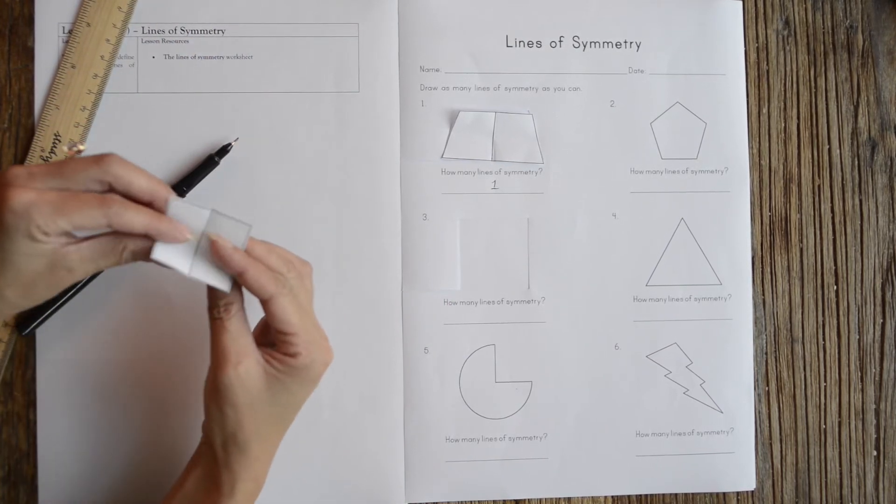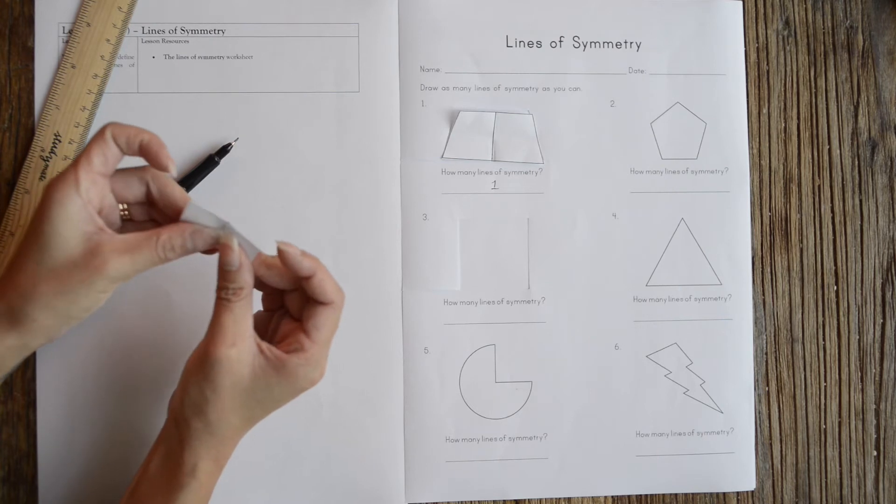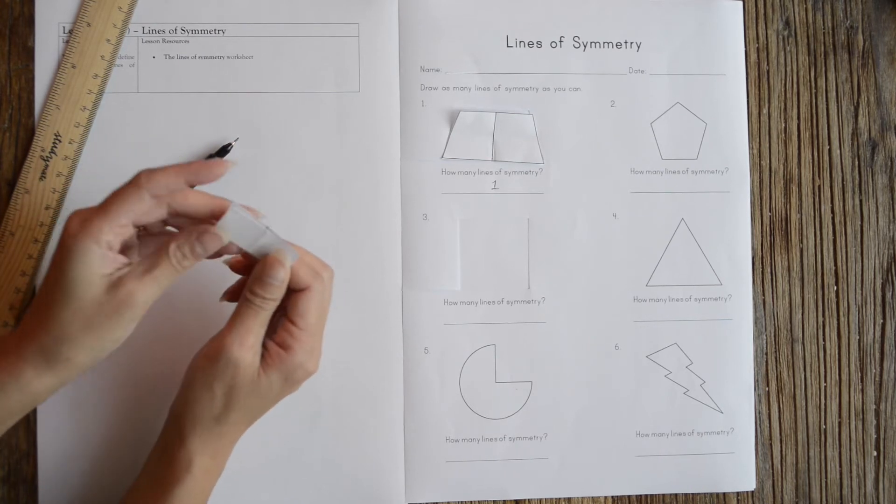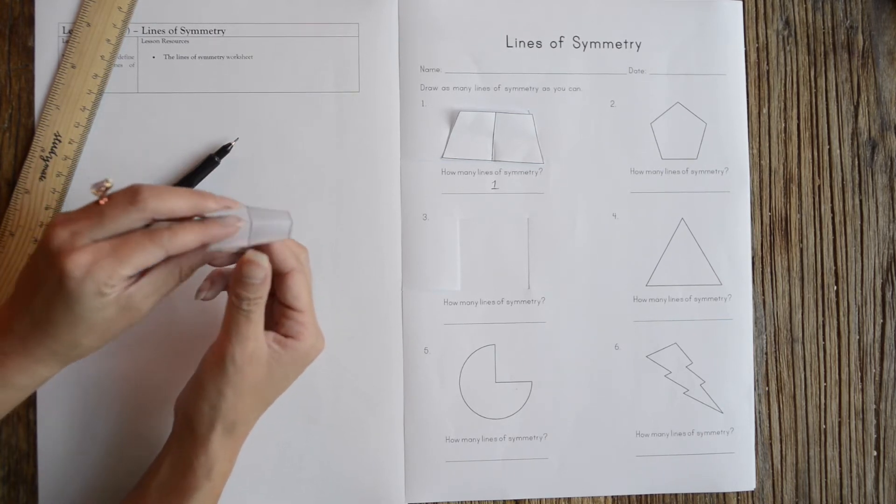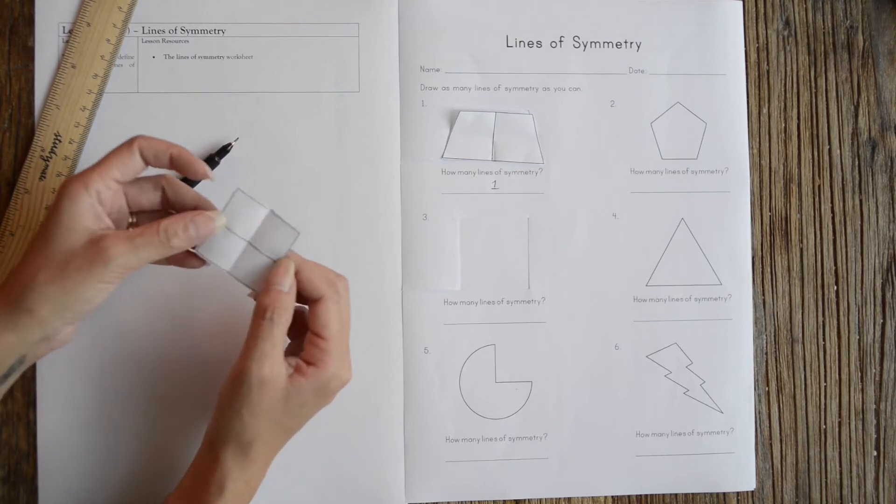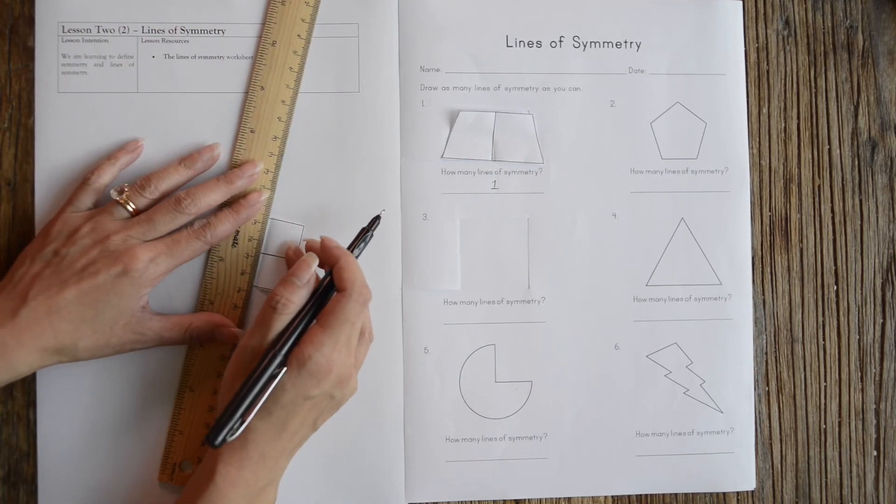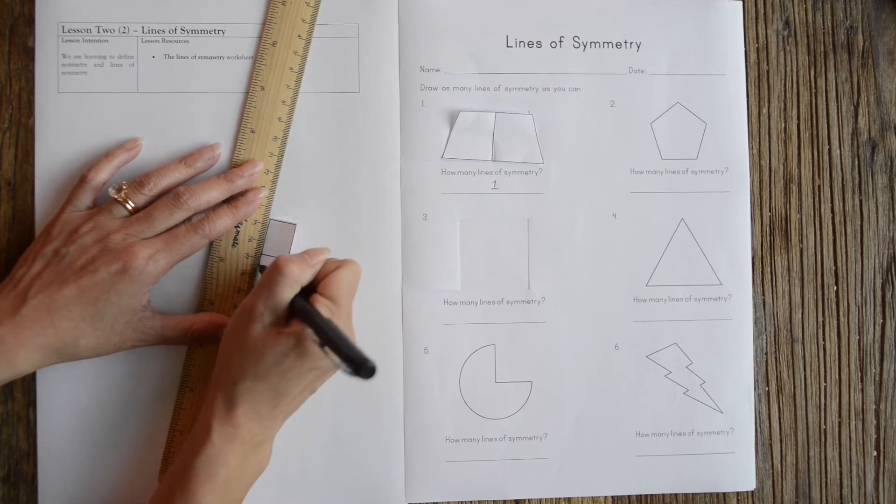But I could also fold it this way. And I still have two rectangles that are a mirror image of each other, so I can draw another line there. So far I have two lines of symmetry.